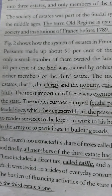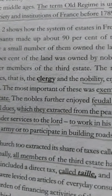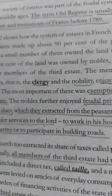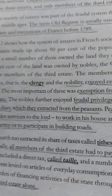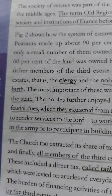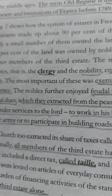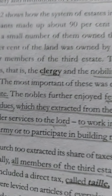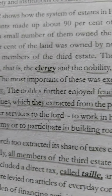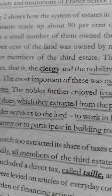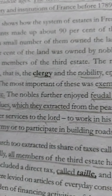Good morning students. Today we are going to start Part 2 of Chapter 1, which is the French Revolution — the first chapter of the Class 9 History book. In the last class we discussed the three estates: Clergy, Nobility, and the Third Estate. We learned that Clergy and Nobility were not paying taxes, but the Third Estate — which included peasants, artisans, small farmers, and landless laborers — had to pay taxes.